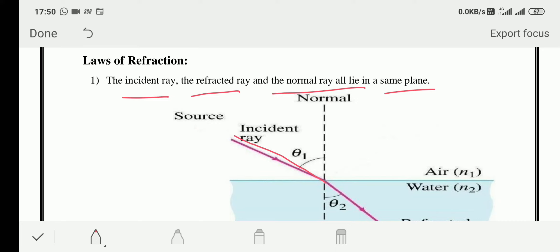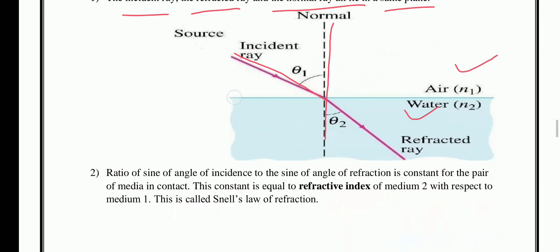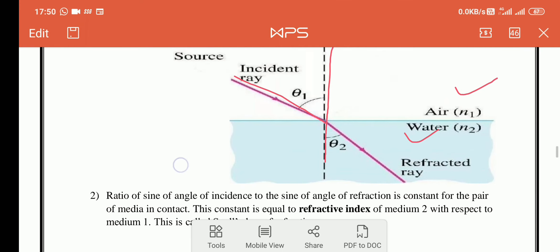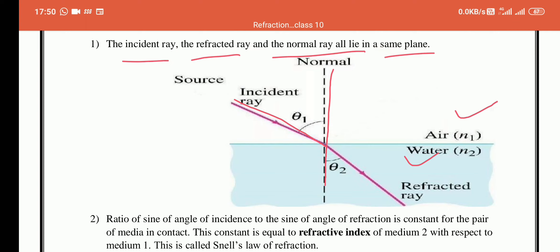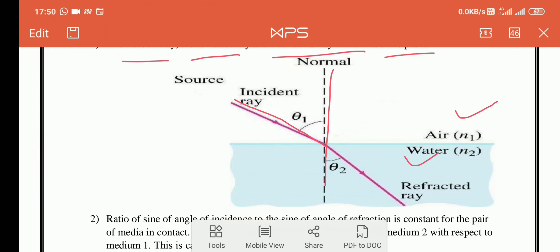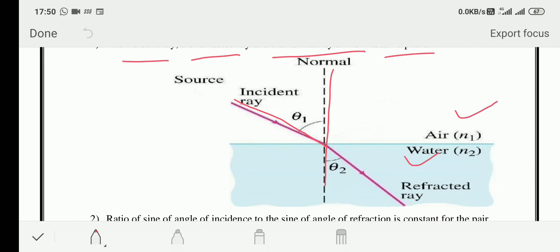The incident ray is the ray that falls on the surface. The normal is drawn perpendicular to the surface separating the two media. The refracted ray is the ray in the second medium. As you can see in the picture, the incident ray, normal, and refracted ray all lie in the same plane, meaning all three can be drawn on a single page.